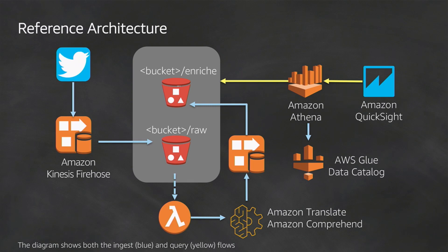The Firehose calls a Lambda function to transform and enrich the record. First it puts the raw records into an S3 bucket. When that bucket gets a new raw JSON file, it triggers a Lambda function that calls out to Translate to translate the tweet text, and calls Comprehend to detect sentiment and key entities.